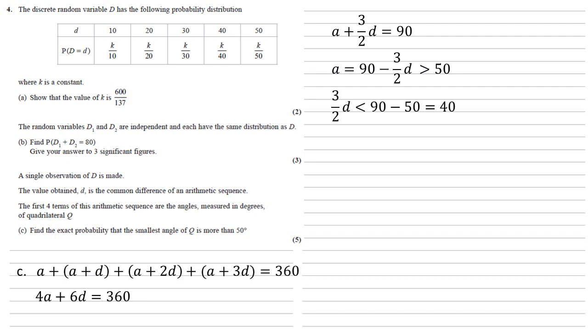Rearranging this, we get 3 over 2D must be smaller than 90 minus 50, which is 40. Hence, D is smaller than 80 over 3, which as a decimal number is 26.67.